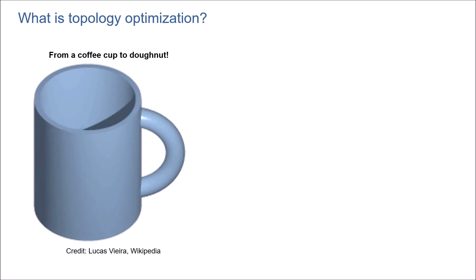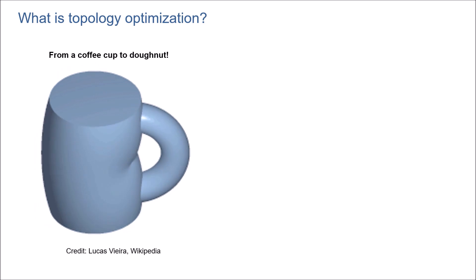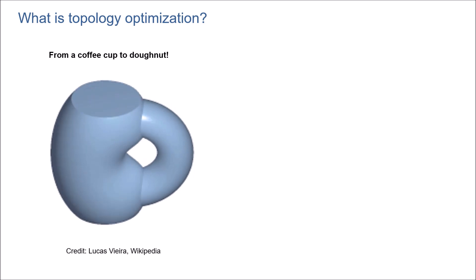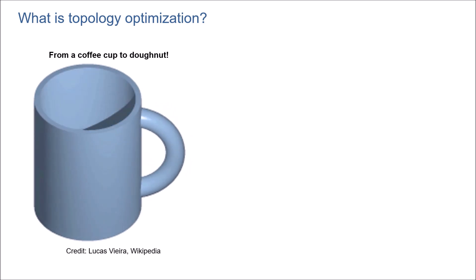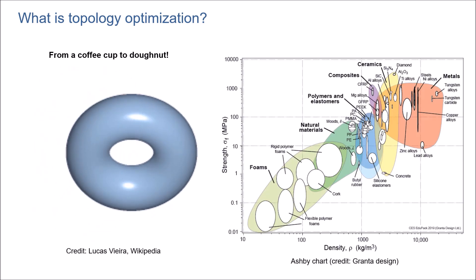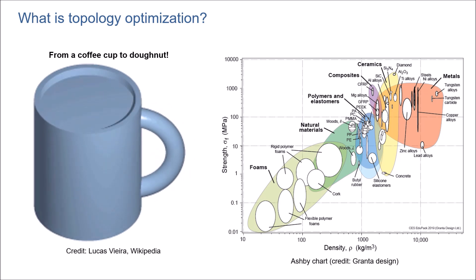You could say how this basic example could be related to the application of topology optimization. Now, let's talk about its application to real-world engineering problems, and how we can use topology optimization. For example, in structural mechanics, we use the Ashby chart, which shows the strength of materials versus the density of different types of materials.